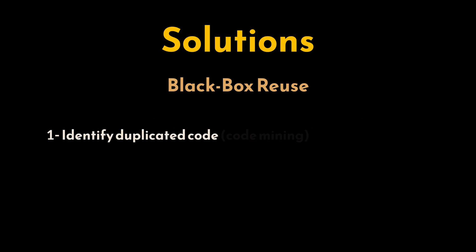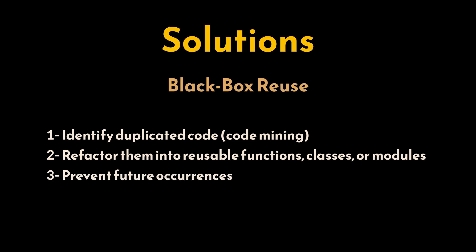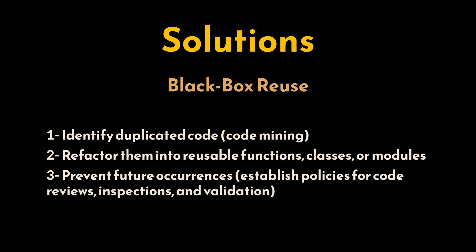To start addressing the problem, the first step is identifying duplicated code. This process, often called code mining, involves systematically searching through the code base for repeated patterns. Once duplicates are identified, the next step is to refactor them into reusable functions, classes, or modules. Additionally, configuration management should be put in place to prevent future occurrences, including establishing policies for code reviews, inspections, and validation, as well as educating developers on the importance of reusable code.